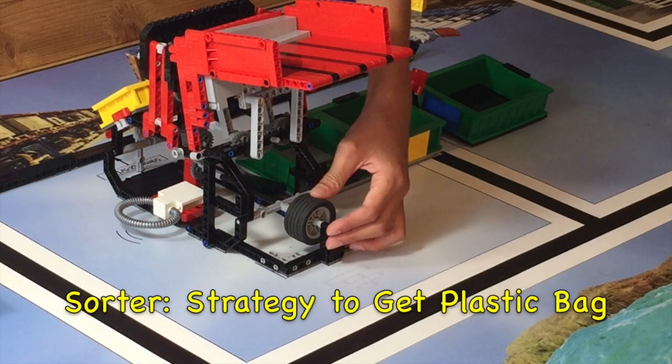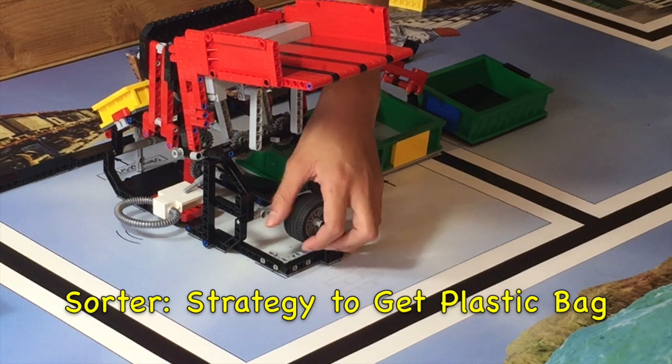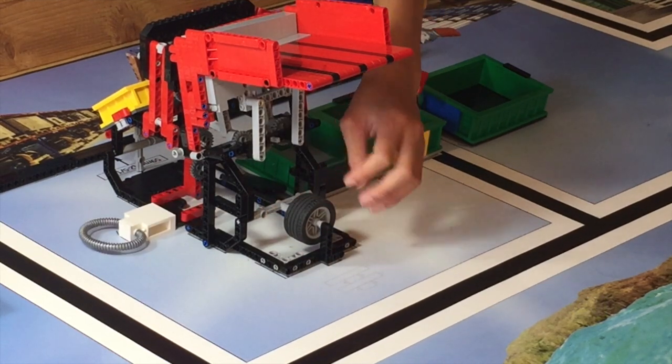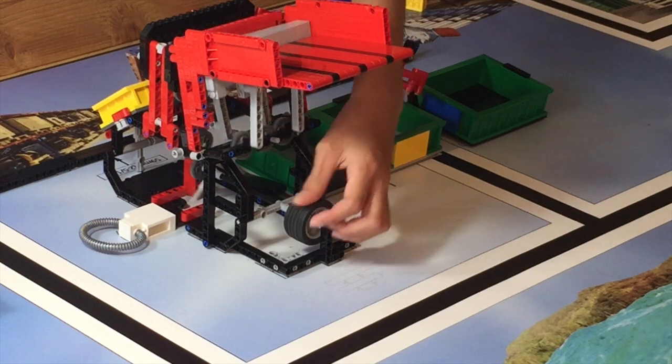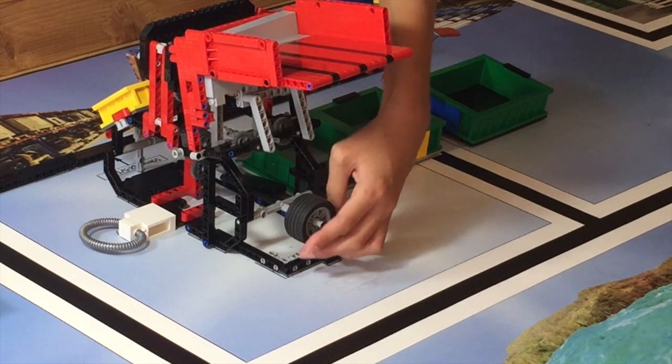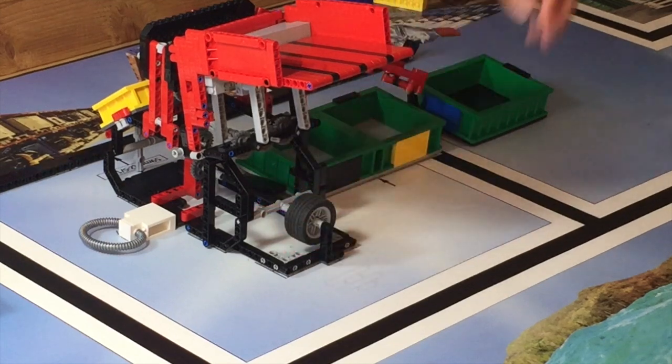Right now the plastic bag is jamming the Sorter. To take it out, you spin the wheel counter-clockwise to push the plastic bag out, then spin the wheel clockwise to unjam it. Then you can use a cage to take the plastic bag.